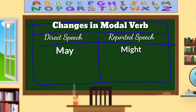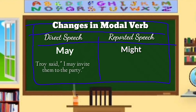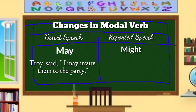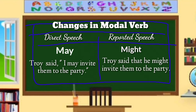Direct speech uses 'may,' while reported speech uses 'might.' For example — DS: Troy said, 'I may invite them to the party.' RS: Troy said that he might invite them to the party. 'May' is changed to 'might.'